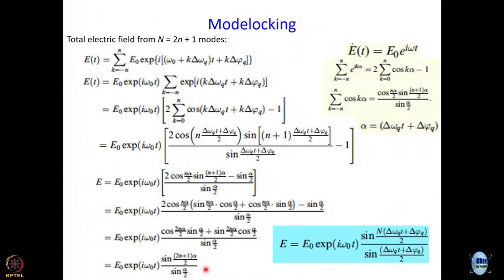What is 2n+1? It is capital N, the total number of longitudinal modes. So we write the intensity in terms of capital N, and the expression becomes E = E₀·e^(iω₀t) multiplied by sin(N·(Δω·t + Δφ)/2) / sin((Δω·t + Δφ)/2). The quality of the slide improves here. The intensity goes as [sin(Nx)/sin(x)]², where x = (Δω·t + Δφ)/2.